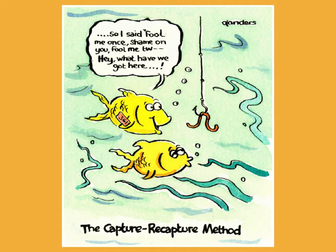First things first — what is Capture & Recapture? Well, this cartoon by Hollander's nails it. It summarizes nicely the principle of Capture & Recapture. You have two fish staring at one on a hook. The fish above has a tag, number 361. It says to the other untagged fish: 'Fool me once, fool me twice — hey, what have we got here?' And you have all the elements of Capture & Recapture.